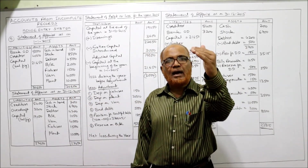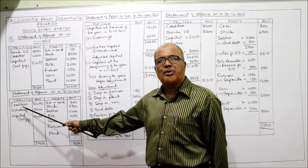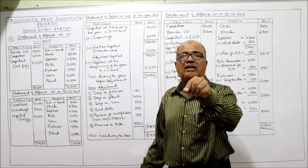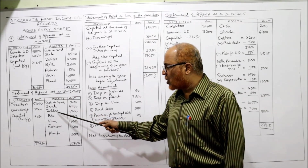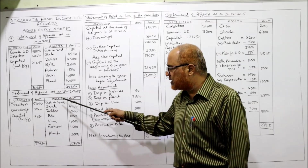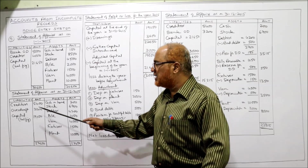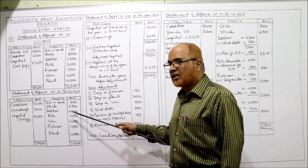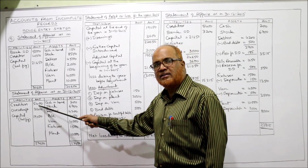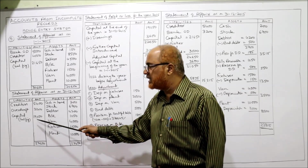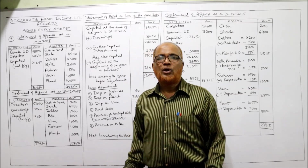Similarly we find the closing capital. Statement of affairs at the end of the year, 31st December 2015 — all assets are taken from the problem. Two liabilities: creditors and bank overdraft. Total on asset side is 27,650. Deduct 5,400 and 3,200. The balancing figure — capital at the end of the year — is 19,050. This is before adjustment.